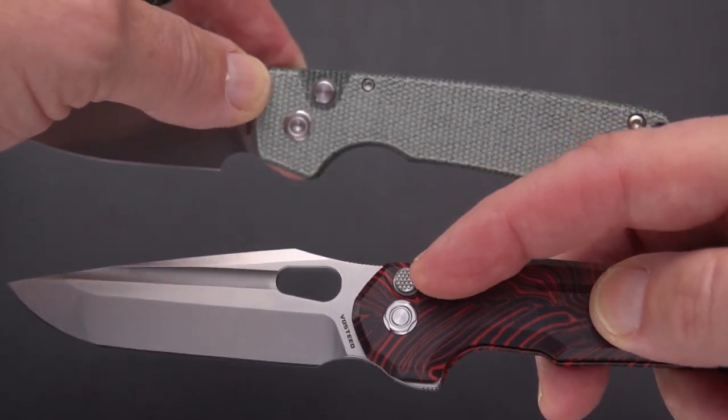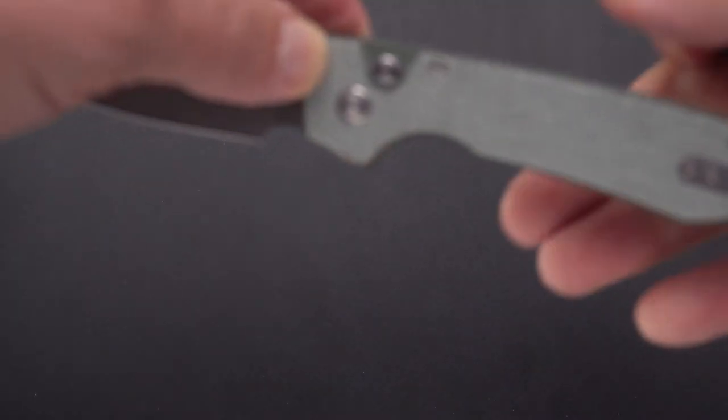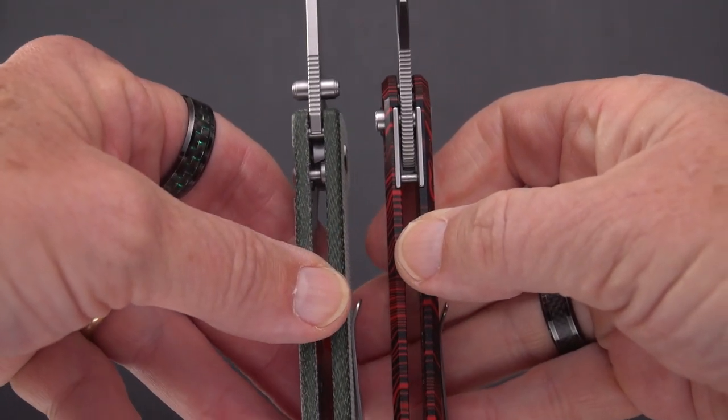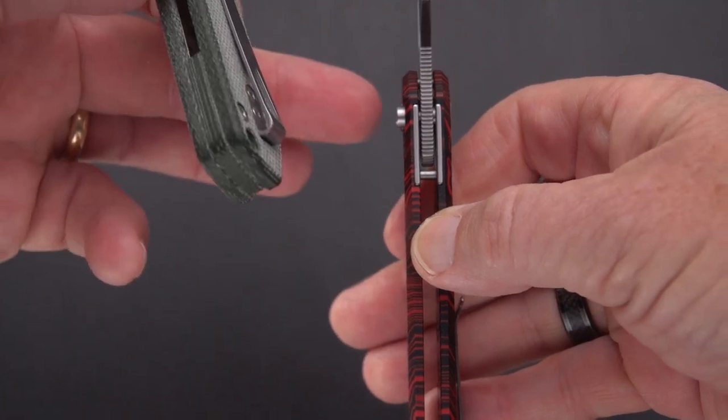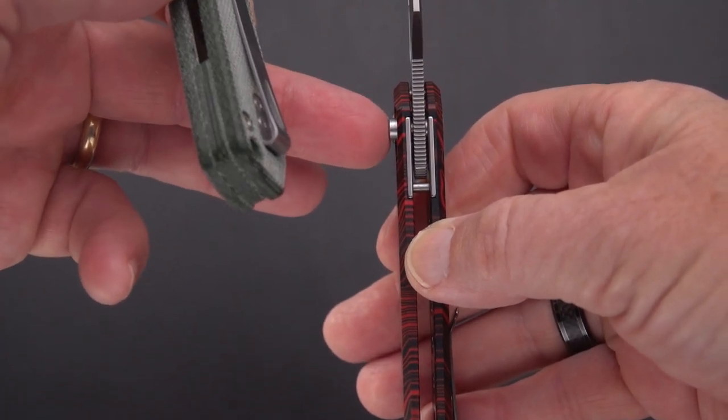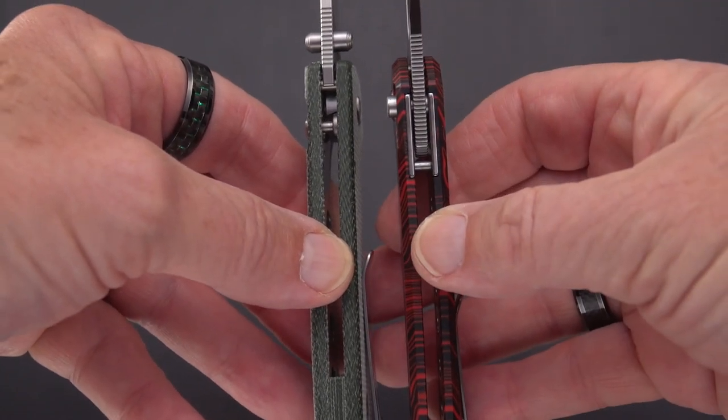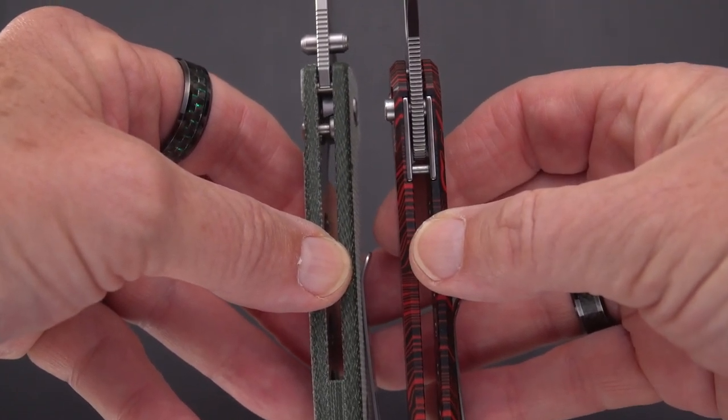There's a slight recess here for this one, but if we look at them both in the open position, you can see that this is far more proud of the handle than on the Raccoon. It sticks way out.